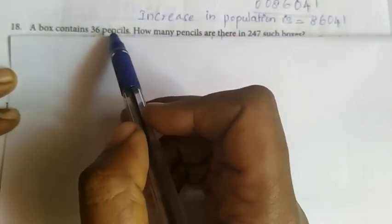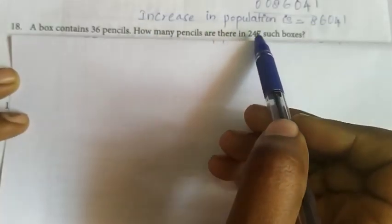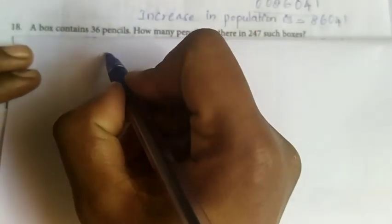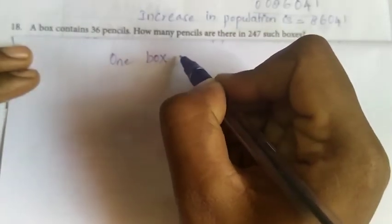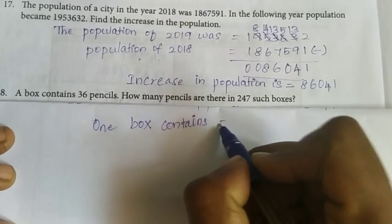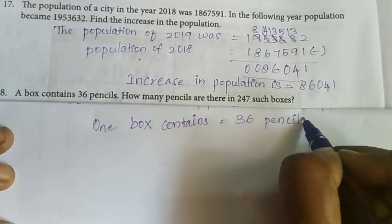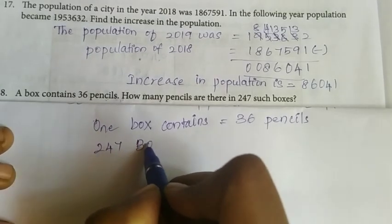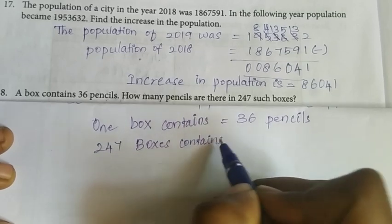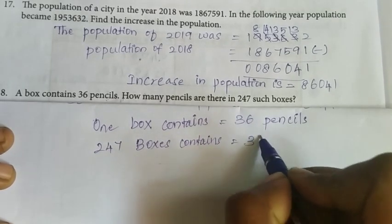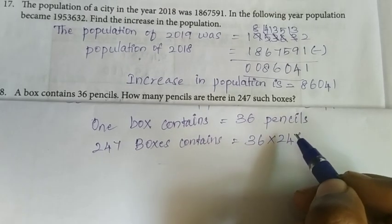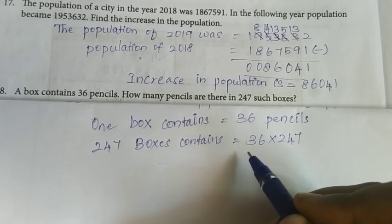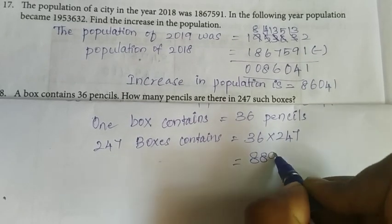Eighteenth question: A box contains 36 pencils. How many pencils are there in 247 such boxes? Given that 1 box contains 36 pencils, 247 boxes contain 36 × 247 pencils. Multiplying these we get the count of pencils present in 247 boxes, which is 8,892 pencils.